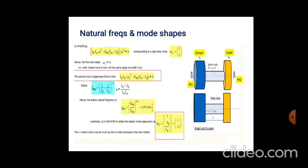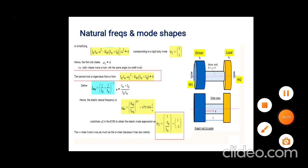In torsional vibrations, the most common examples involve coupling and tap connections — these are the twisting applications where torsional effects are most significant.